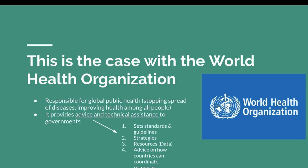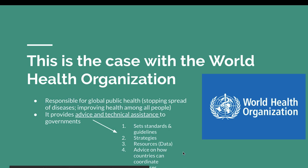The WHO tells governments about available vaccines and provides resources and data relevant for dealing with crises. It can also be a place where countries come together to coordinate responses — for example, China and the US, even though they're not cooperating at the moment, could combine their resources to find a vaccine much more quickly by meeting within this forum.